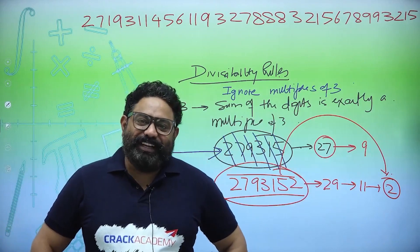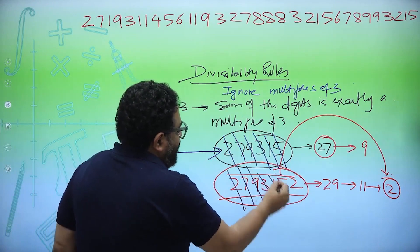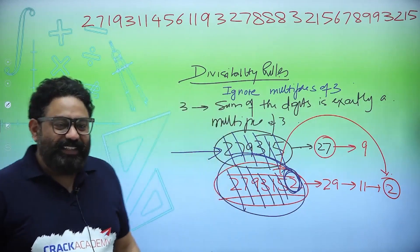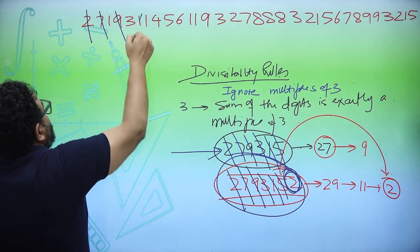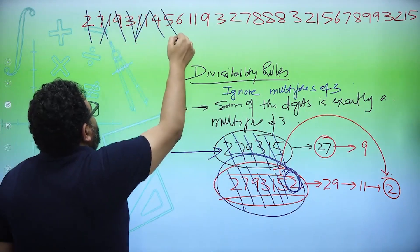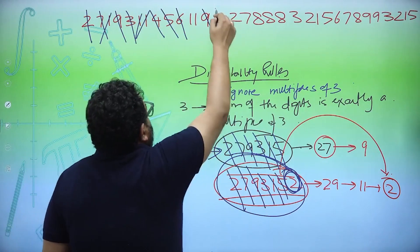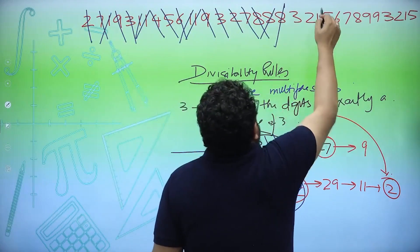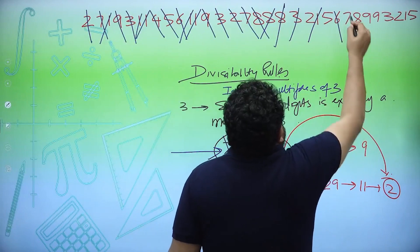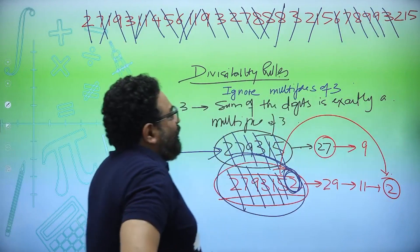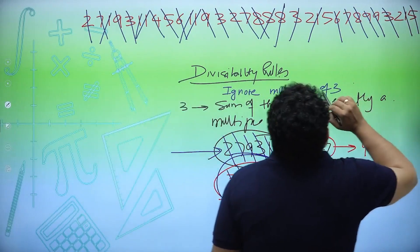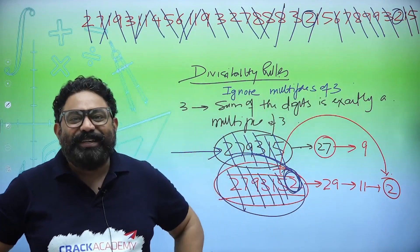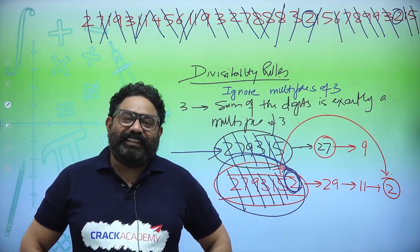This also works for remainders. Take 2793152: 2+7=9, ignore; 9 is a multiple of 3, ignore; 1, 1, 1 — and 3, ignore; 4+5=9, ignore; 6, ignore; 9, ignore; 3, ignore; 1 and 2 — not a multiple of 3; 7+8=15, ignore; 1+8=9, ignore; 8+1=9, ignore; 3, ignore; 6, ignore; 7+8=15, ignore; 9 and 9, ignore; 3, ignore. You're left with 2 and 2. 2+2=4, and 4 divided by 3 gives remainder 1. That's how you crack this easily.